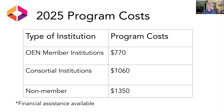For program costs in 2025: up to this point, IMLS paid, but the grant is now complete so we do need to charge something to cover our costs. OEN member institutions pay $770. Consortial institutions pay $1,060. Non-members pay $1,350. There is financial assistance available, which involves asking a colleague or supervisor to send a letter on your behalf. That financial assistance brings the cost down to $430.